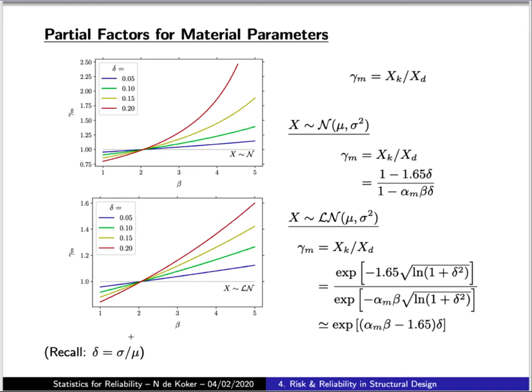When we look at partial factors for material parameters, the idea of a partial factor as a scaling of interval bounds emerges quite nicely. Rewriting our earlier scaling equation, we can define the partial material factor as the ratio of the characteristic value and the design value of our material parameter, and then simply apply the expressions that we have for different interval bounds that we derived in an earlier lecture.